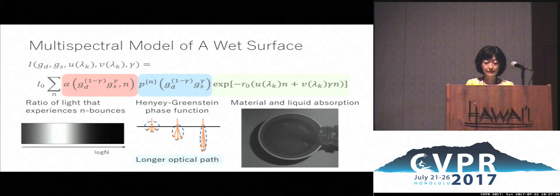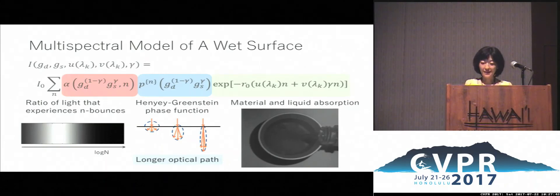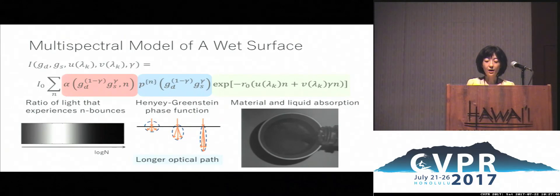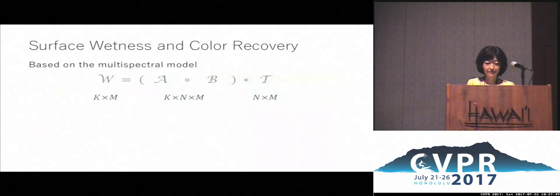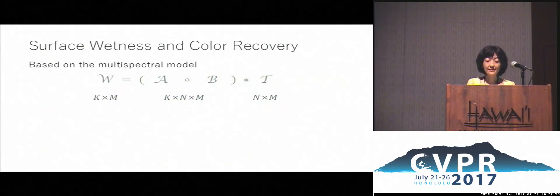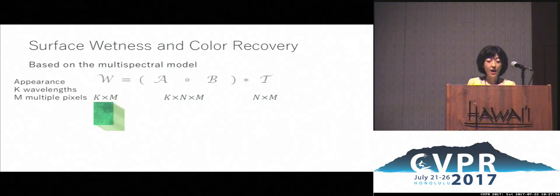We derive this model based on general mild assumptions, like perpendicular incidence light on a homogeneous material surface. We extend the single surface point case to the multispectral surface appearance W of k wavelengths and m pixels.